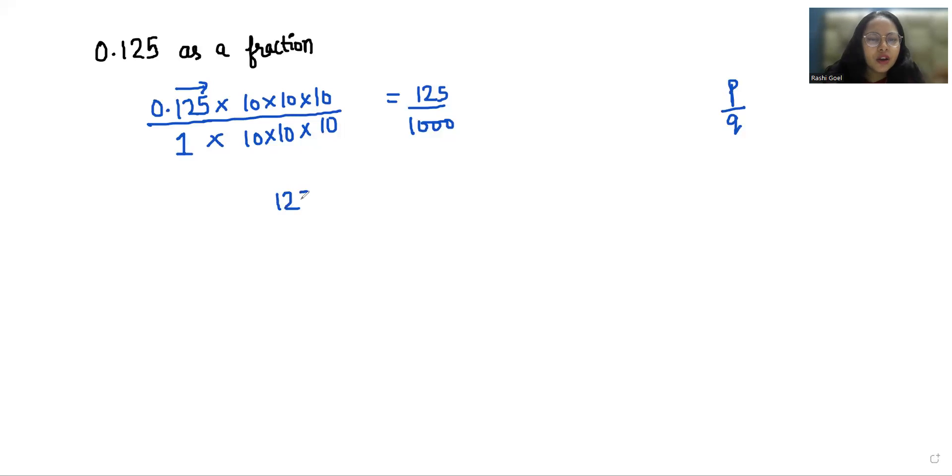So this is the fraction form. Now we are going to reduce it by dividing by 5 in numerator and denominator. So this gives us 25 and this gives us 200.